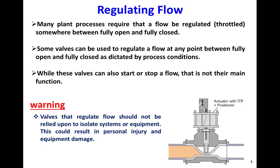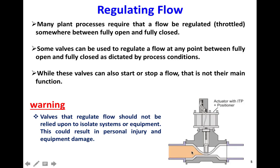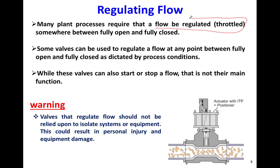A regulating valve is used to regulate the flow rate. By moving the diaphragm up and down, the flow inside the pipe can be adjusted — we can increase, decrease, or totally close the flow. Adjusting or regulating the flow rate is also called throttling the flow, which means regulating or adjusting the flow. Most of the time we need to adjust the flow rate between the two extreme cases, which are the fully open valve and the fully closed valve.